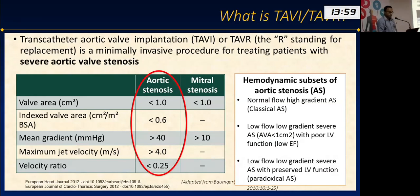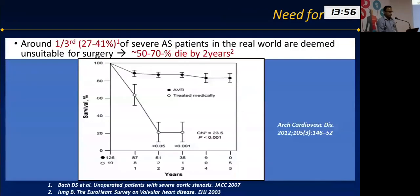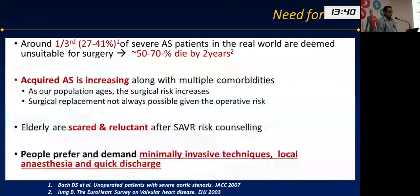In addition to the usual high-gradient classical AS, there are two more hemodynamic subsets: low flow, low gradient AS with reduced LV function, as well as with normal LV function. We need TAVI because 30 percent of patients with AS do not undergo surgery, and half of those patients die by two years. Medical management has no role in the treatment of severe aortic stenosis.